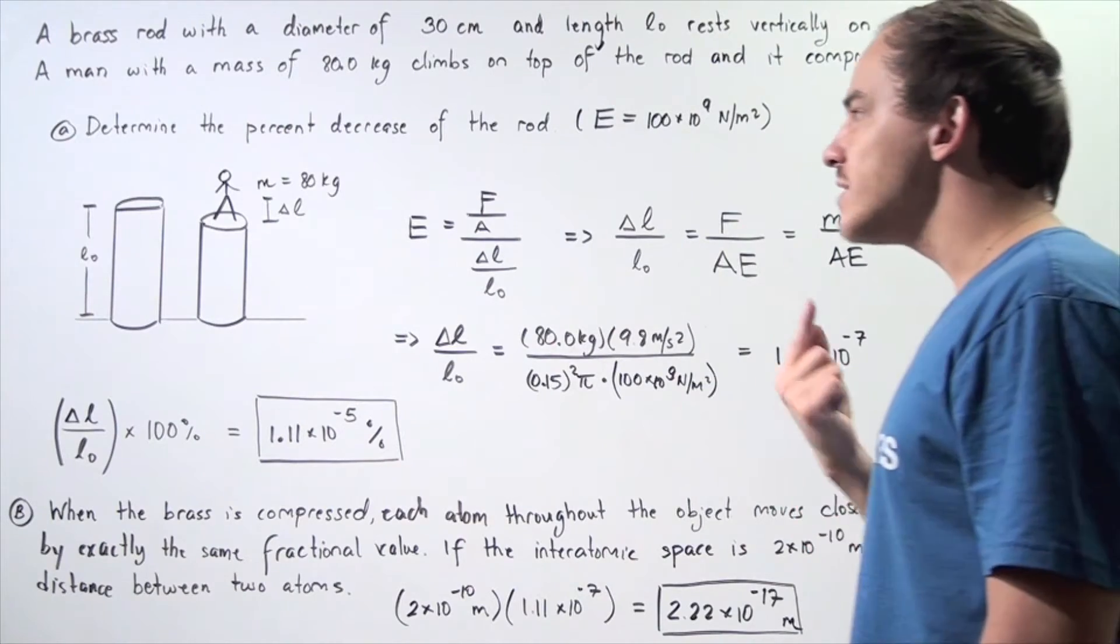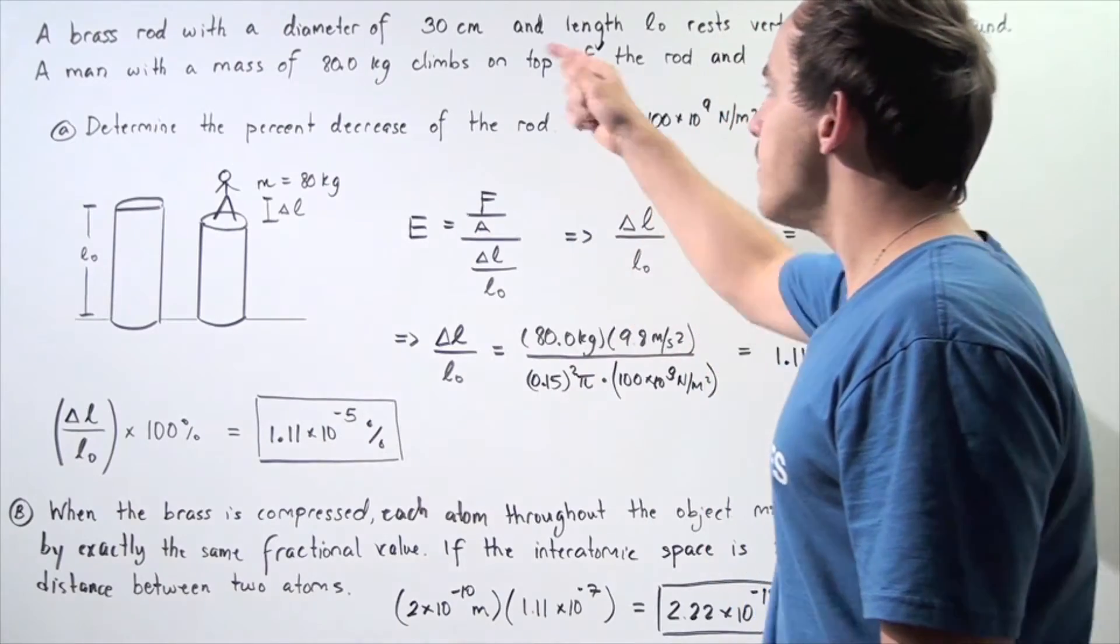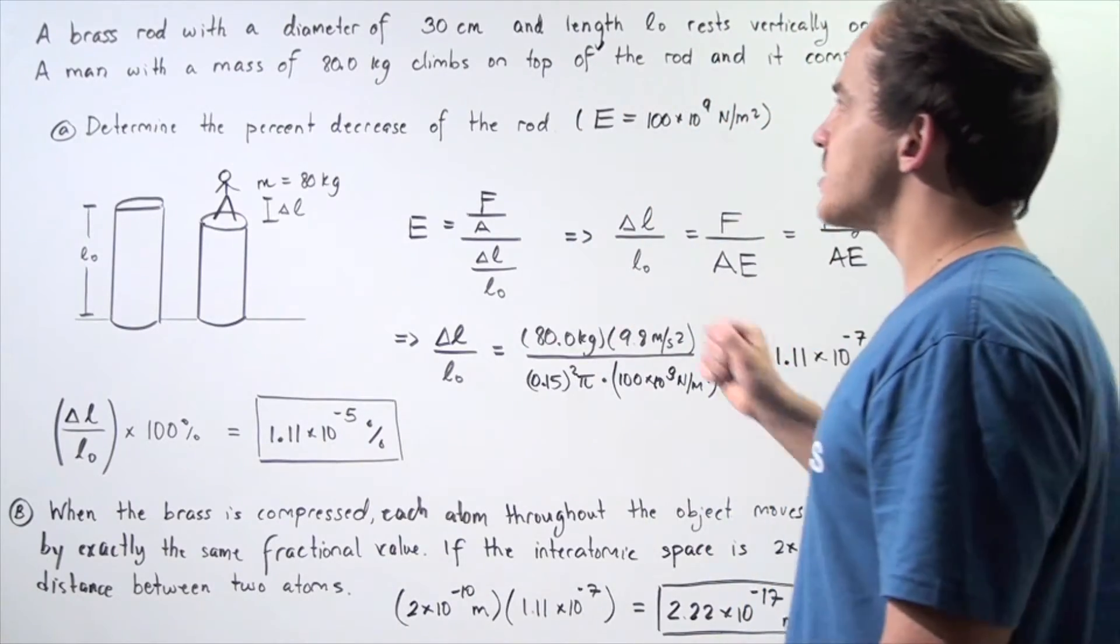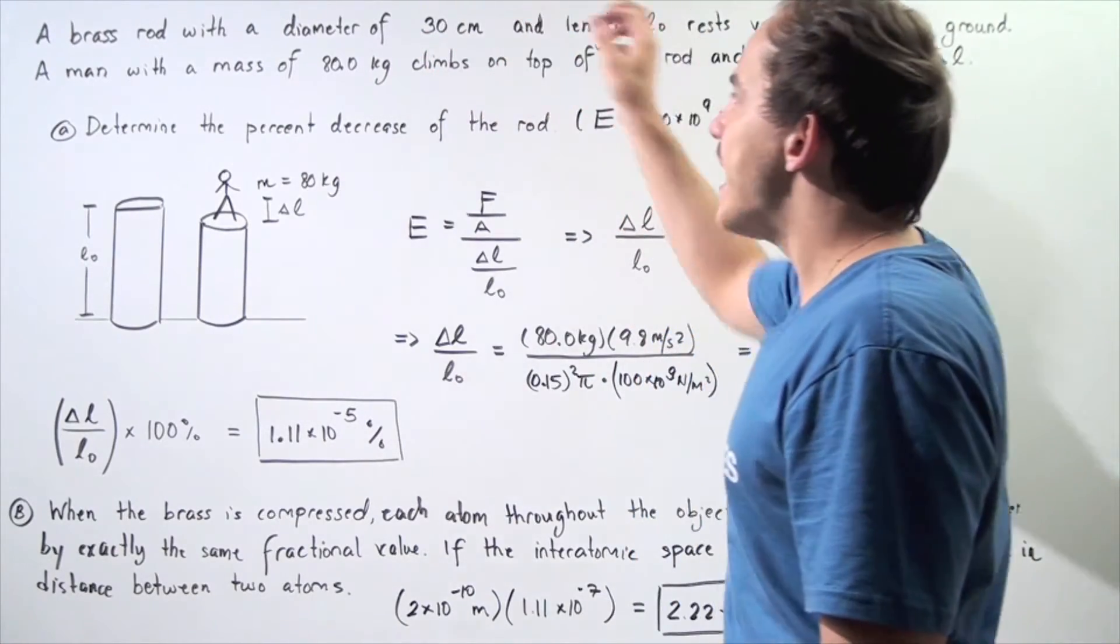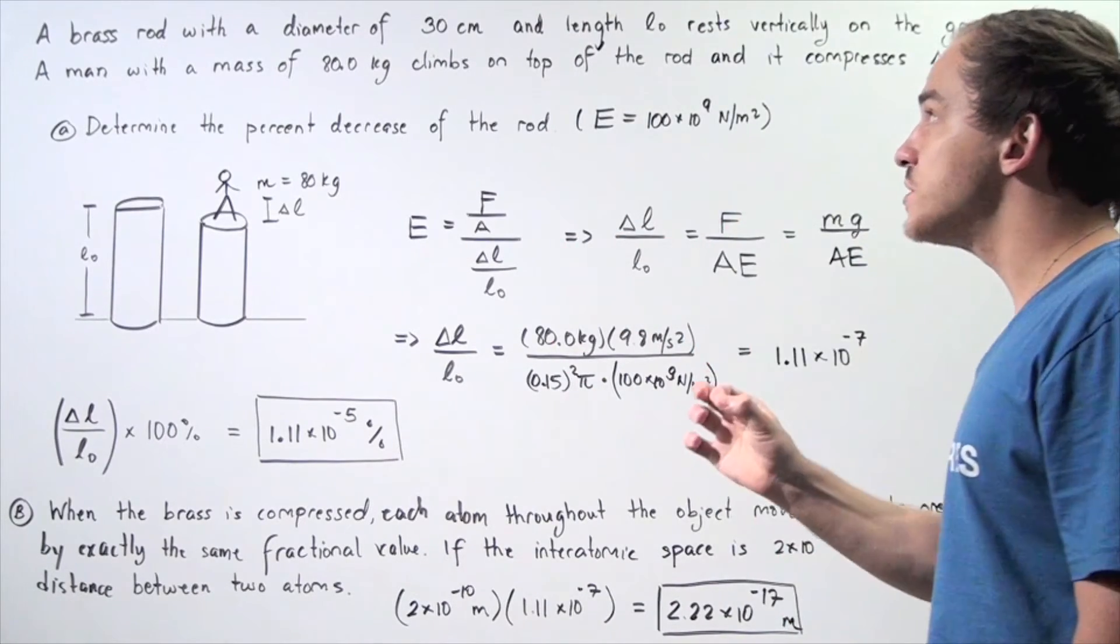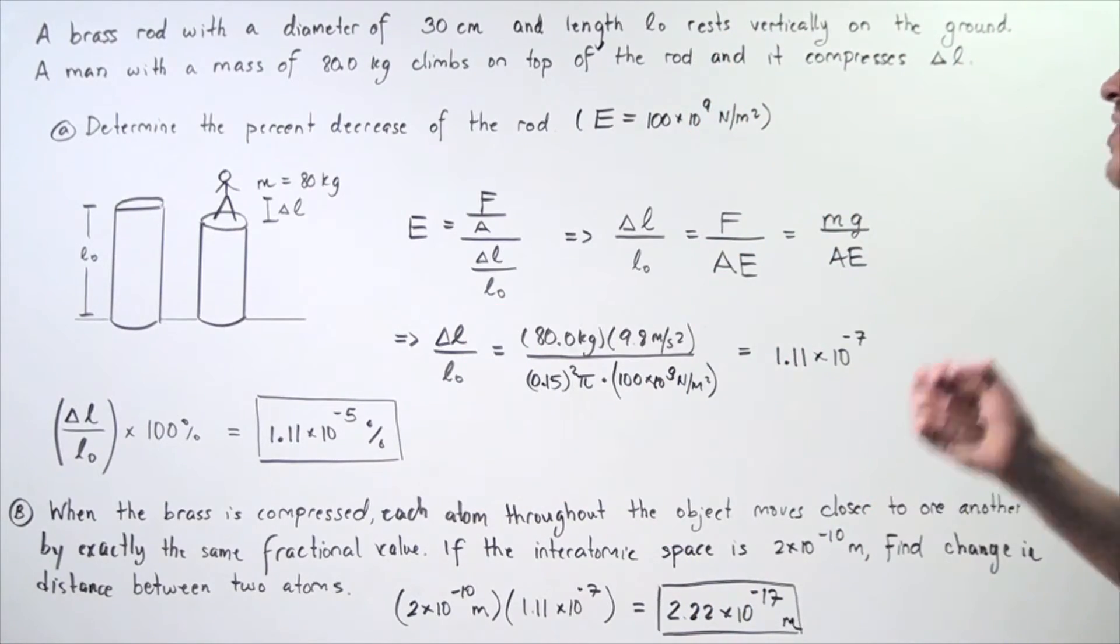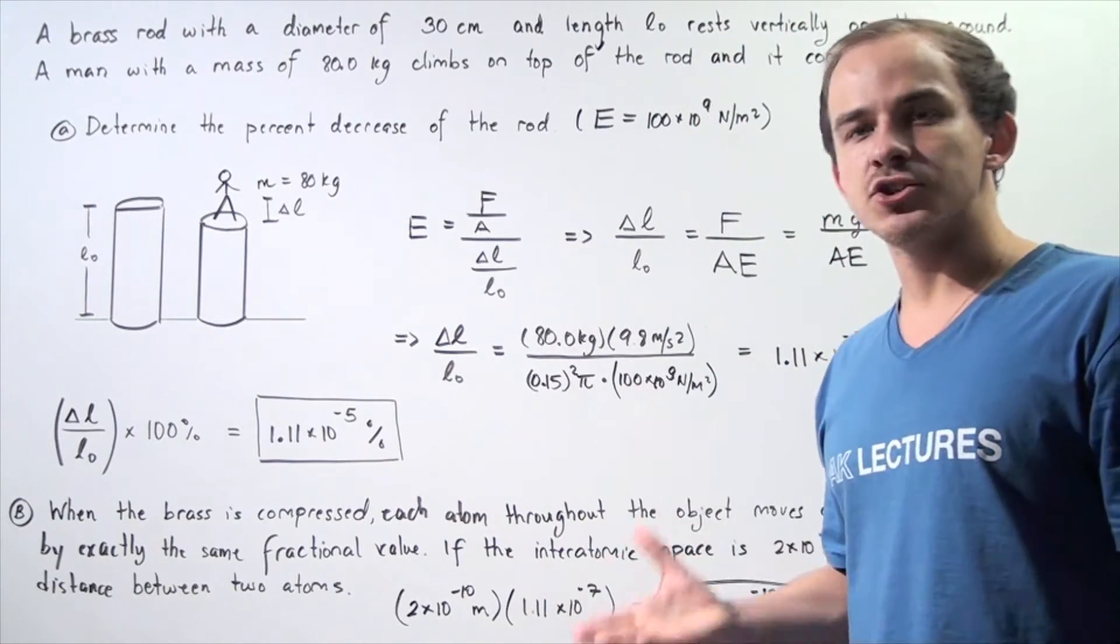A is simply the cross-sectional area of the rod. So, we know what our diameter is, to find the radius, we simply divide by 2, and then we divide by 100 to convert centimeters to meters. We multiply by pi, and we take the square of the radius, and that will give us the cross-sectional area.